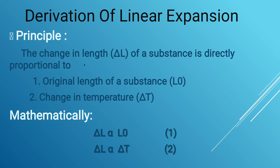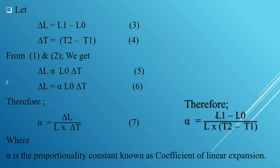Now let us see the derivation of the linear expansion principle. The change in length delta L of a substance is directly proportional to two main factors: first, the original length of the substance, denoted by L0, and second, the change in temperature, delta T. Mathematically, delta L is directly proportional to L0, and delta L is also directly proportional to delta T. Combining these, delta L is directly proportional to L0 times delta T.